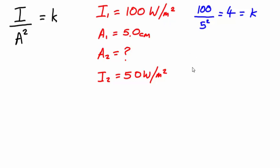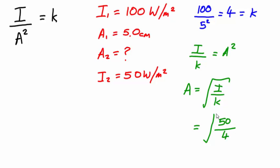Now, to work that out for our final amplitude, we need to rearrange our equation to make A the subject. That would make I divided by k equals A squared. So A equals the square root of I over k. Our new intensity, 50, divided by our constant 4, and that gives us a new amplitude of 3.53 centimeters.